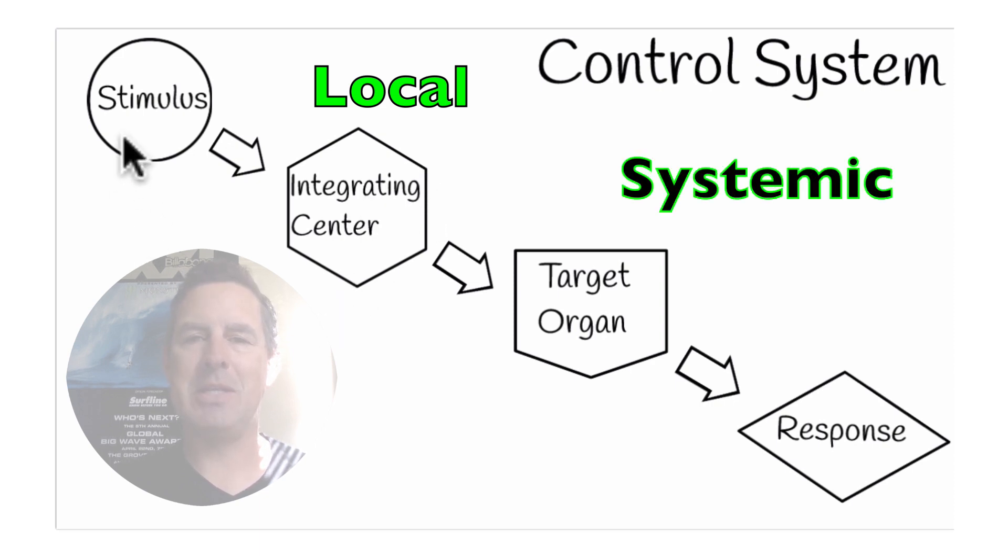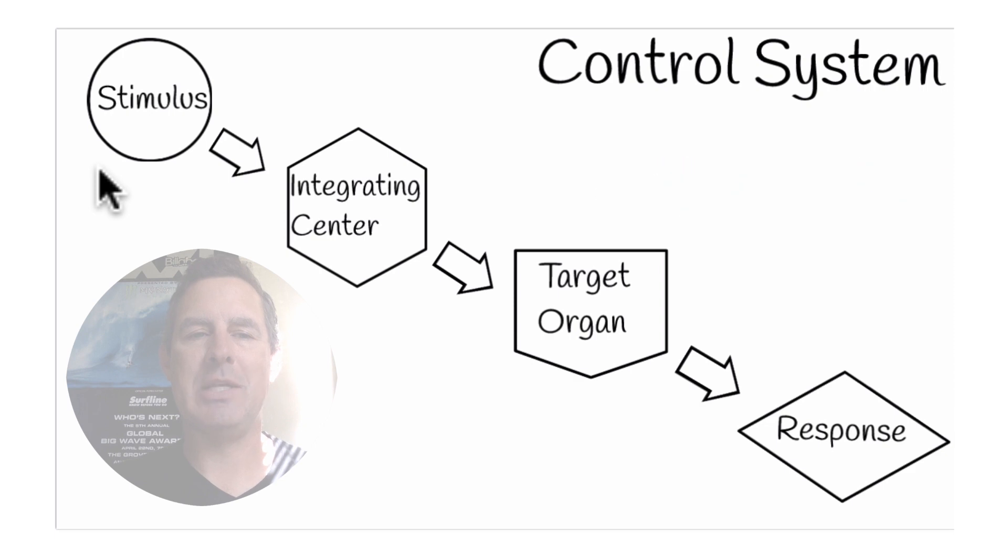So whatever stimulus that is—and a stimulus is any deviation of a homeostatic variable outside of its acceptable range—so if we talk about body temperature again, if say body temperature is 95 degrees, that's out of the acceptable range that we suggested was 97 to 99. So when body temperature gets out of the acceptable range, that is the stimulus that's going to kick into gear this process.